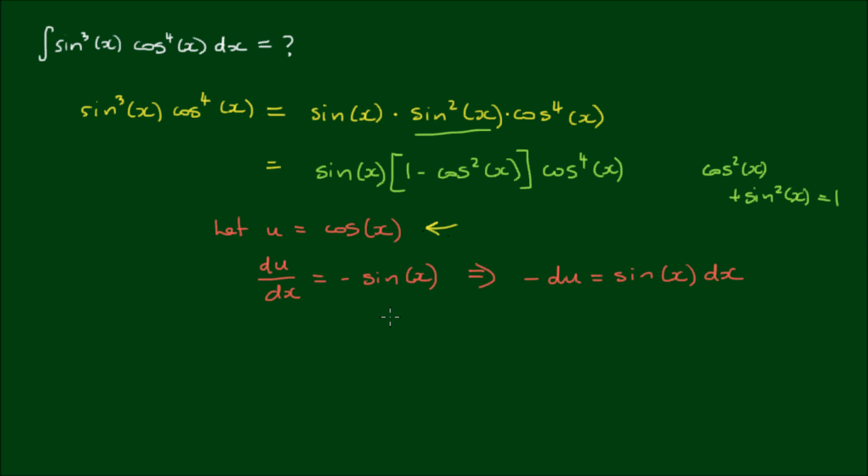Okay, so first making this substitution, my expression becomes sin(x)[1-u²]u⁴. So then the integral becomes the integral of sin(x)[1-u²]u⁴dx.